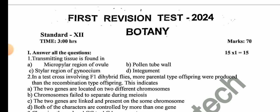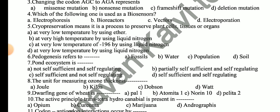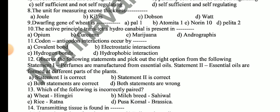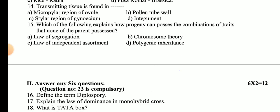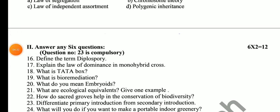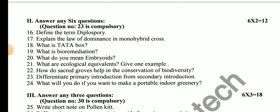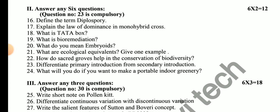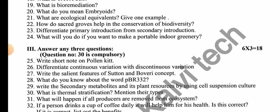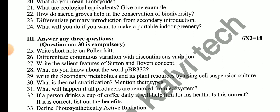Next: First Division test 3, 12th standard botany. For 1-mark questions: Transmitting tissue is found in — (fill in the blank). For 2-mark questions: Define the term diplospory. Explain the law of dominance in monohybrid cross. What is the start-up box? What is bioremediation? What do you mean by embryoids? What are ecological equivalents — give an example? How do seed banks help in conservation of biodiversity? Difference between primary introduction and secondary introduction.